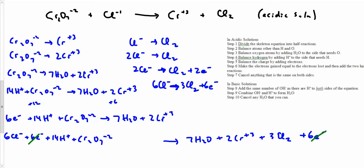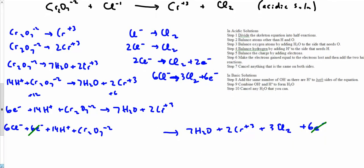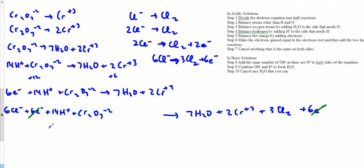All right, so I'm going to rewrite this guy. 6 Cl minus, 14 H plus, and a Cr2O7 minus 2. Now just for fun, let's see that it's balanced for all those things. I know it's balanced for electrons just because I just got rid of 6 and 6 on each side.